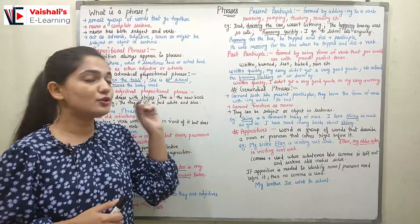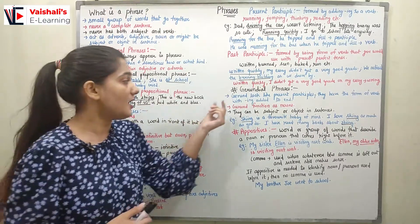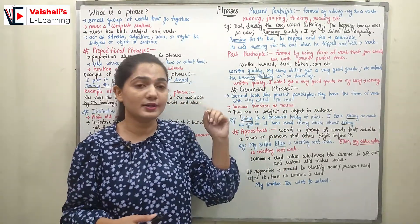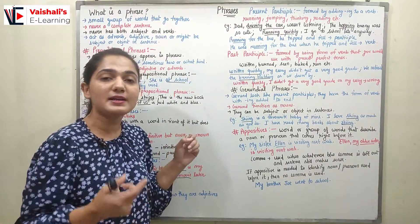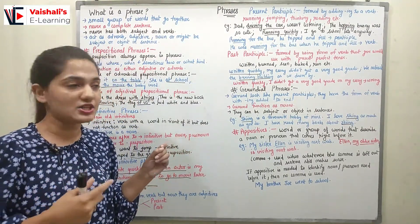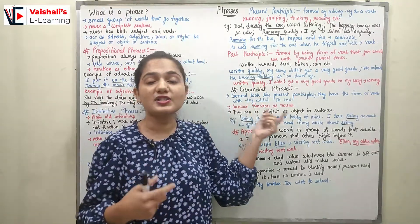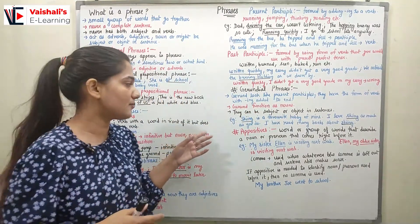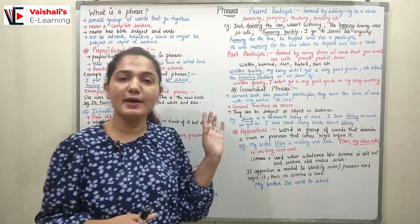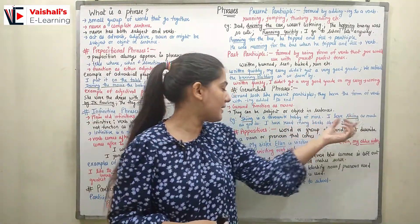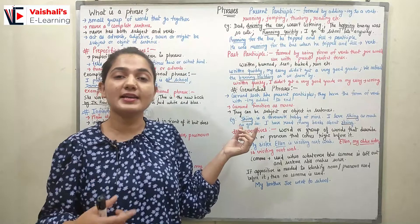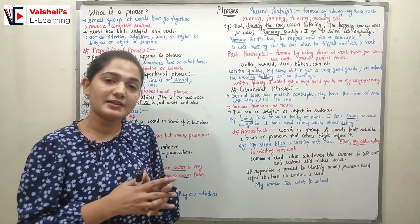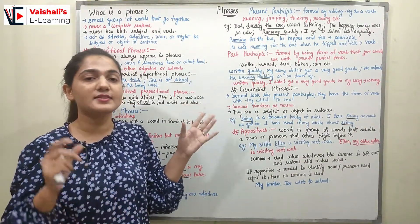What is a gerundial phrase? A gerund looks like a present participle — it has '-ing' added to the verb — but it functions as a noun. Gerunds can be a subject or object in a sentence. For example, 'Skiing is a favorite hobby of mine' — 'skiing' is the subject. 'I love skiing as much as you do' — 'skiing' is the object. 'I have read many books about skiing' — 'skiing' is again used as a noun/object.